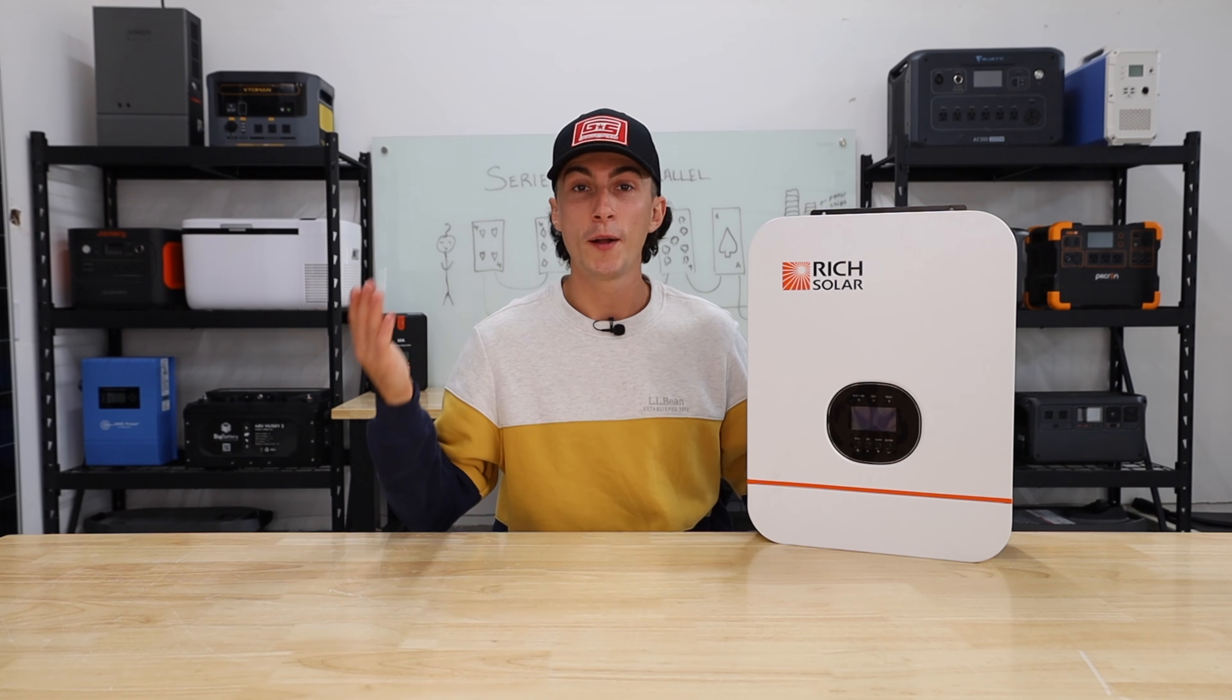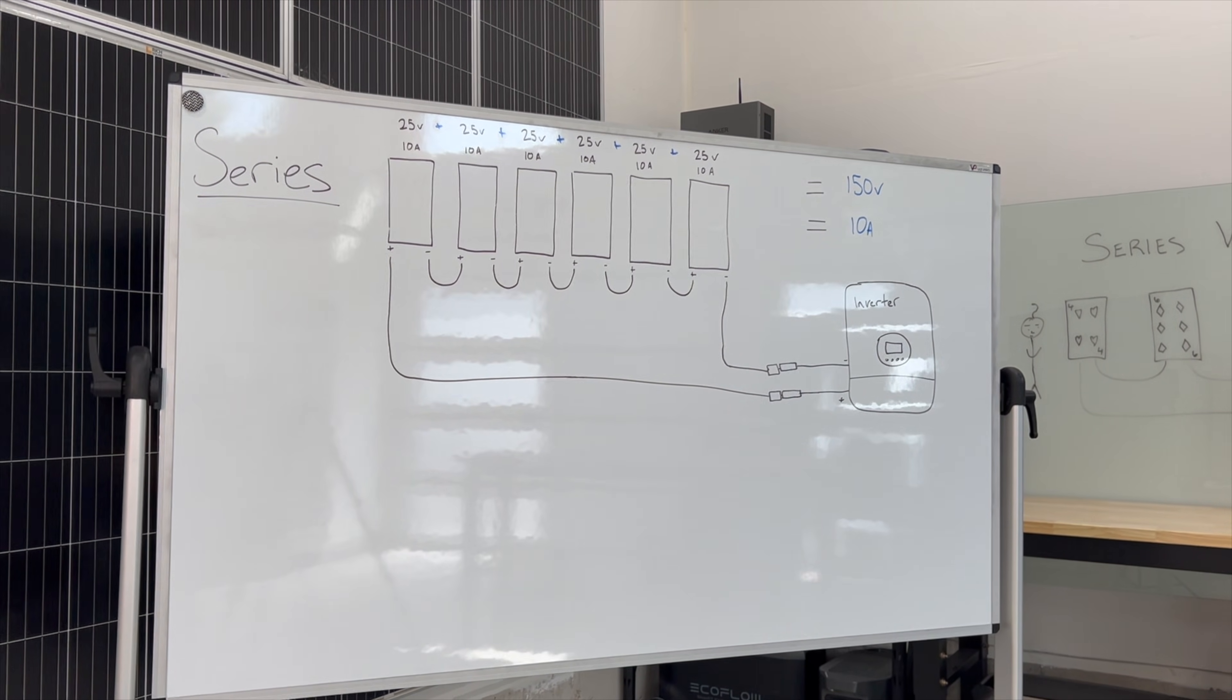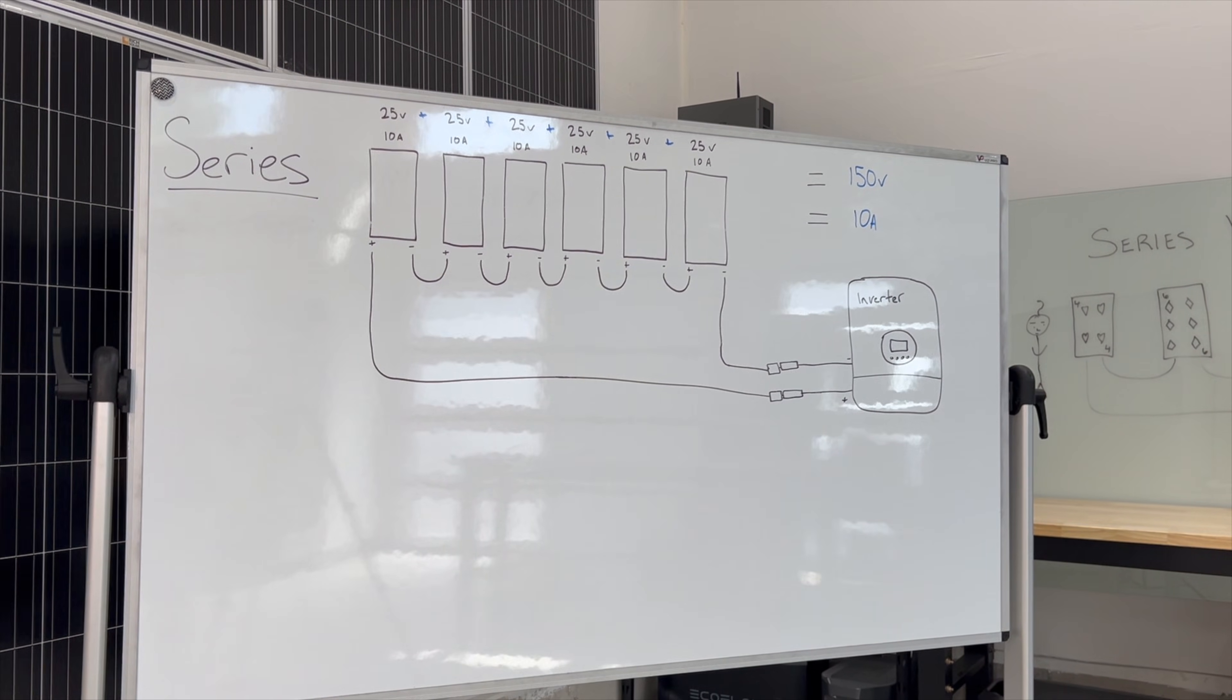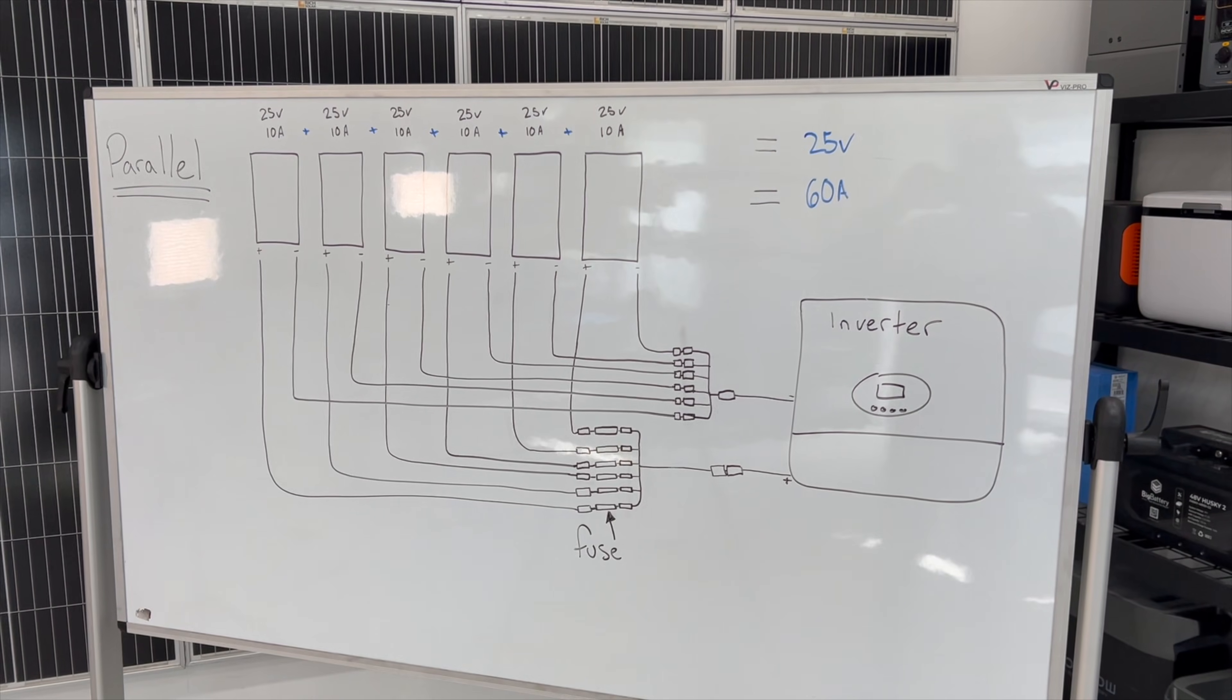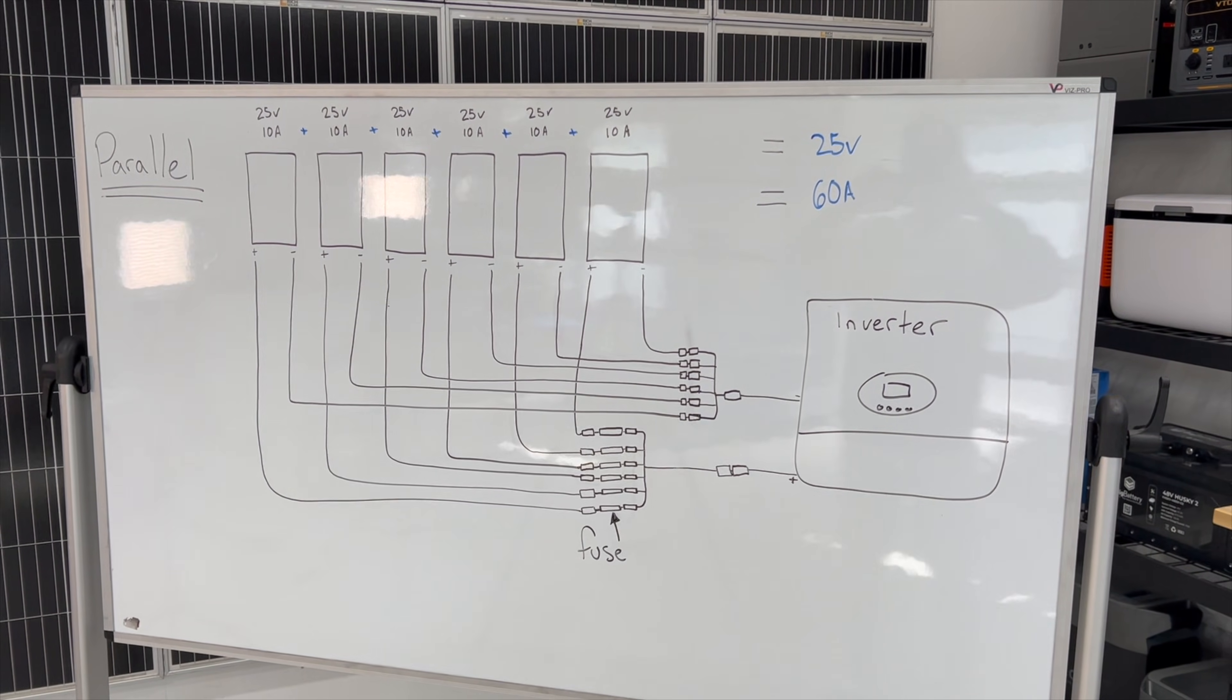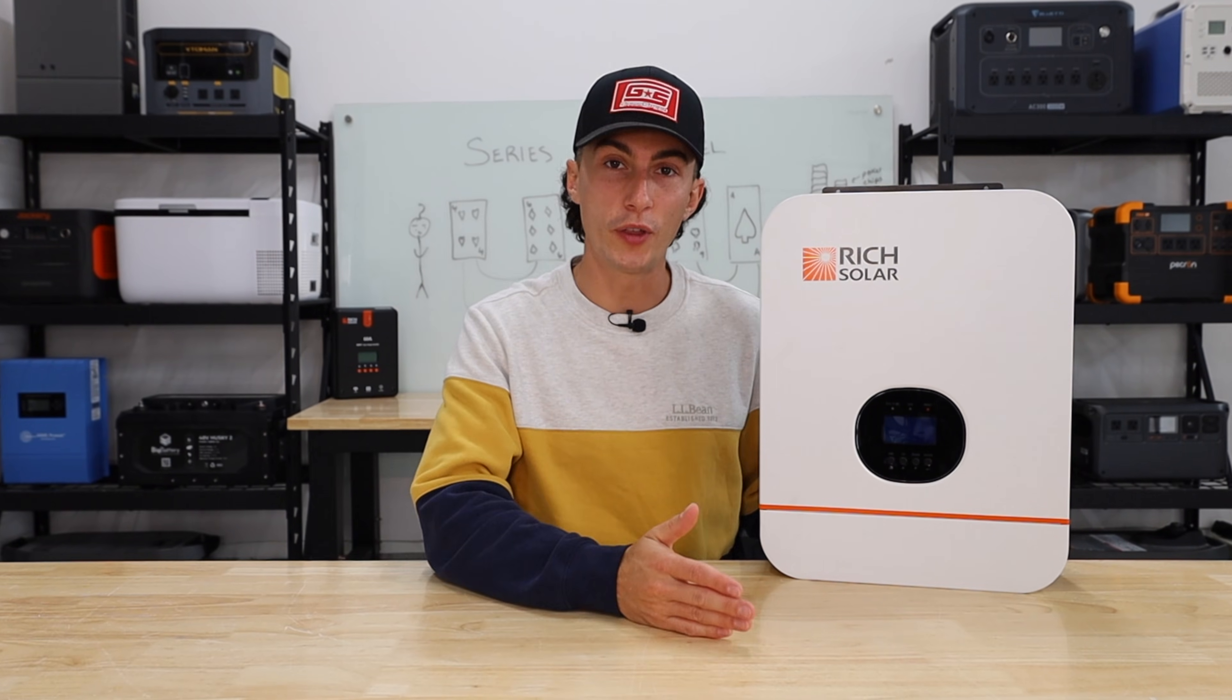But when you wire in series, you actually have too much volts to get into this—you're at 150, this is 115 limit. And when you wire in parallel, you're only at 25 volts and this has a 60-volt minimum before it'll actually recognize the input. But we know that this thing can accept the 1200 watts—it's actually rated to accept up to 4500 watts. So to do that, we're going to need a combination of both series and parallel wiring.